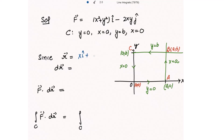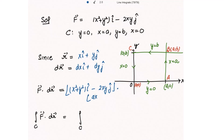Because this is the xy-plane, we take r vector as x i-cap plus y j-cap, and dr vector is dx i-cap plus dy j-cap. Taking the dot product: f vector is (x² + y²) i-cap minus 2xy j-cap, dotted with dr vector, giving f·dr equal to (x² + y²) dx minus 2xy dy.